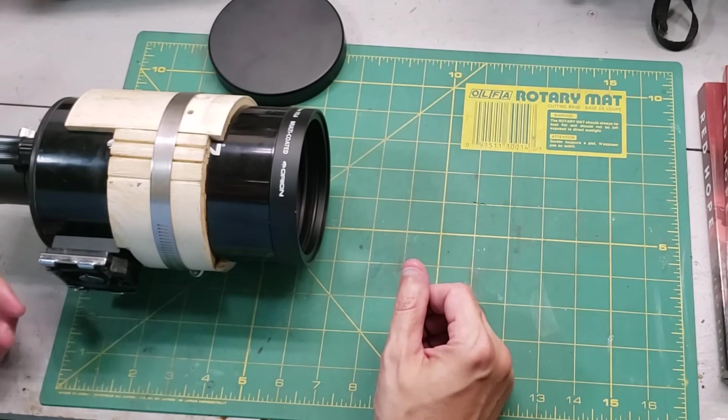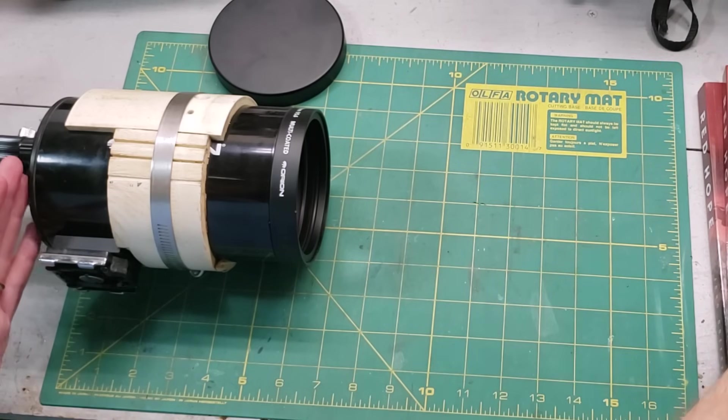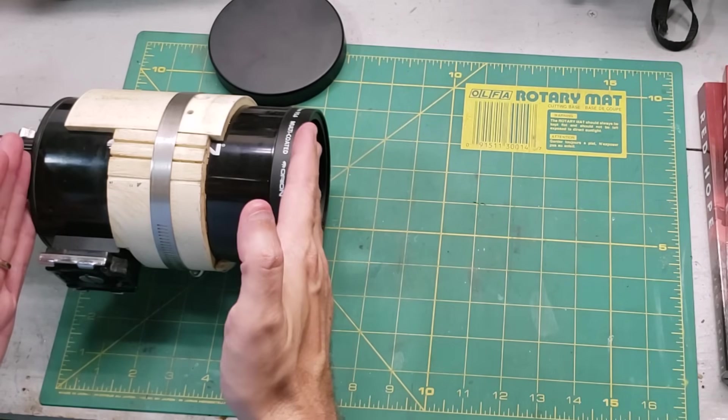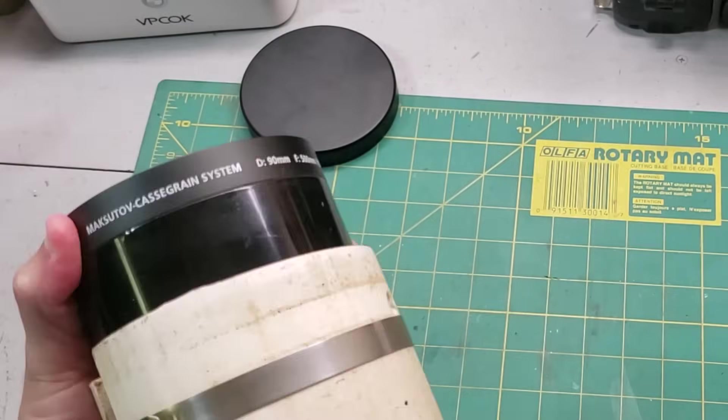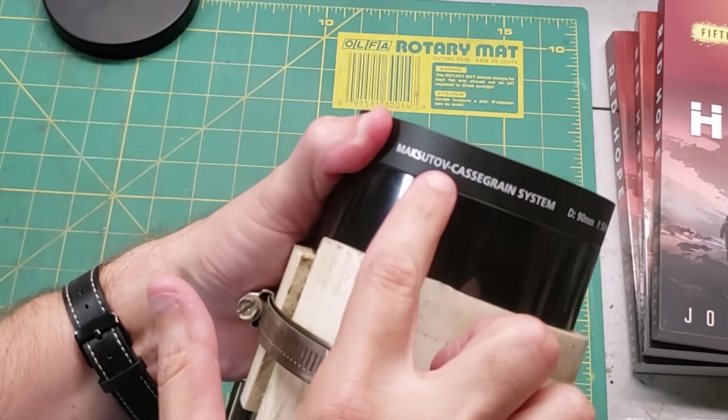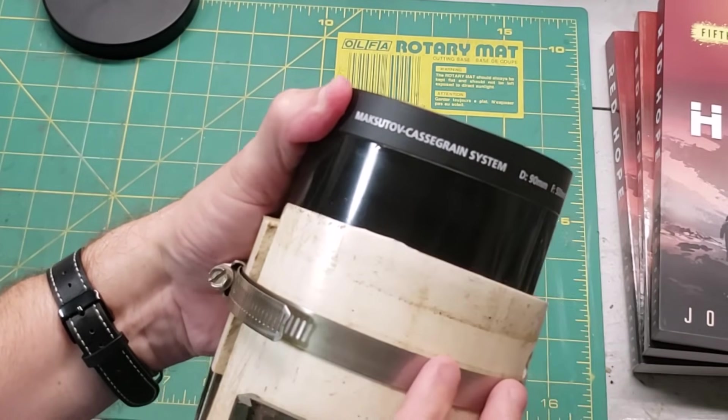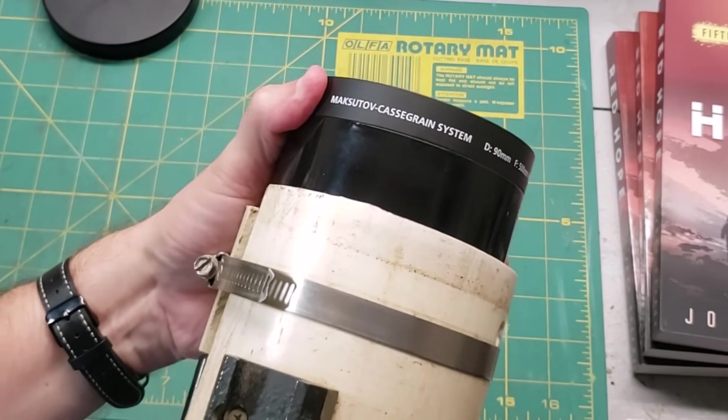That begs the question: how do they fit a focal length that long into a tiny little telescope? The secret is right here in this Cassegrain word. Time for the crash course in telescope history.